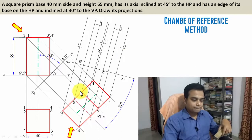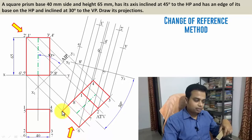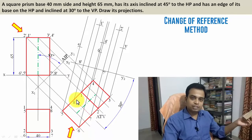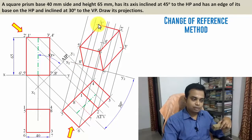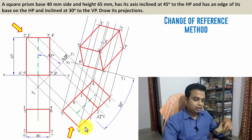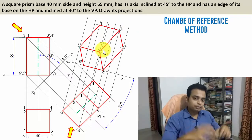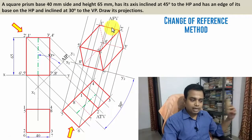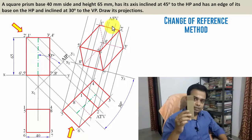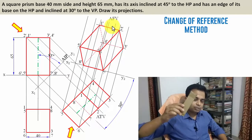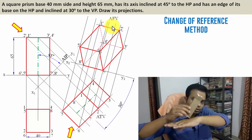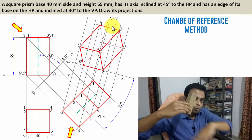The rectangular face 1-2-5-6 is visible to us from this direction, and face 5-6-7-8 is also directly visible, so both are drawn as visible. The portion that appears as a line from the top is also a rectangular face and is visible to us. The edges not directly visible are given hidden lines. That completes the auxiliary front view — the final front view for this square prism whose axis is inclined at 45 degrees to the HP, with a base edge on the HP making 30 degrees with the VP.